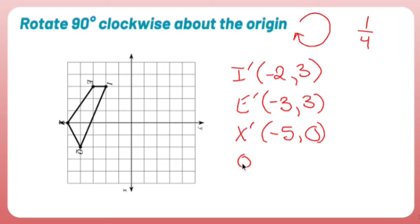And Q appears to be 1, 2, 3, 4, down 1, 2. So negative 4, negative 2.